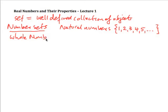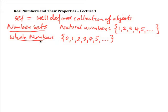Then we have what's called whole numbers. Whole numbers are the same as the natural numbers, except that we also include zero. You can see that the natural numbers belong to the whole numbers, so we say the natural numbers are a subset of the whole numbers, because all the natural numbers are contained in the whole numbers.